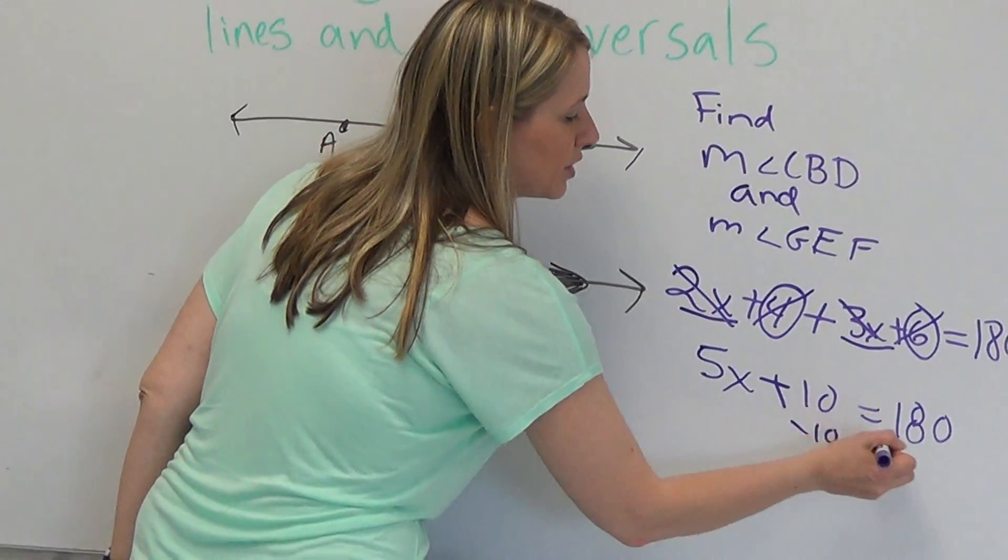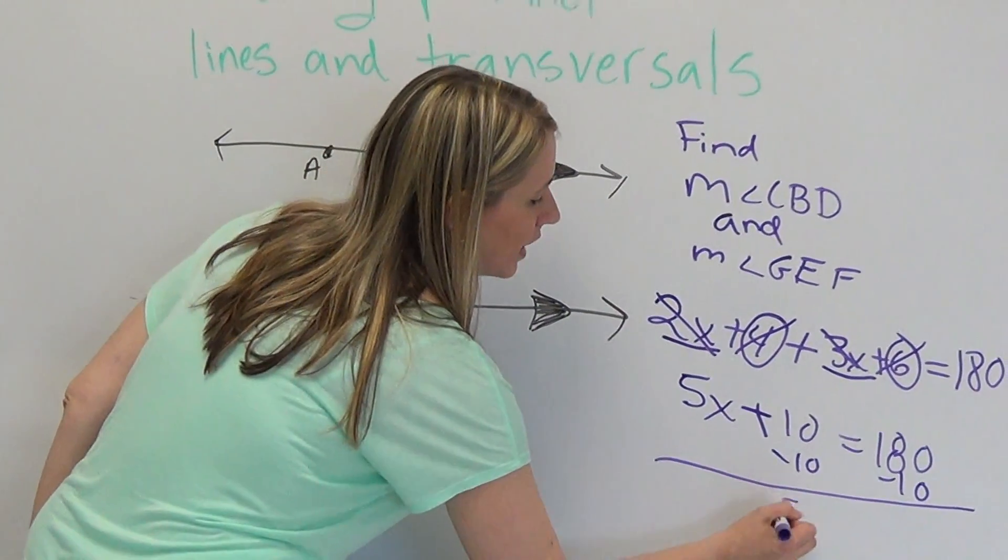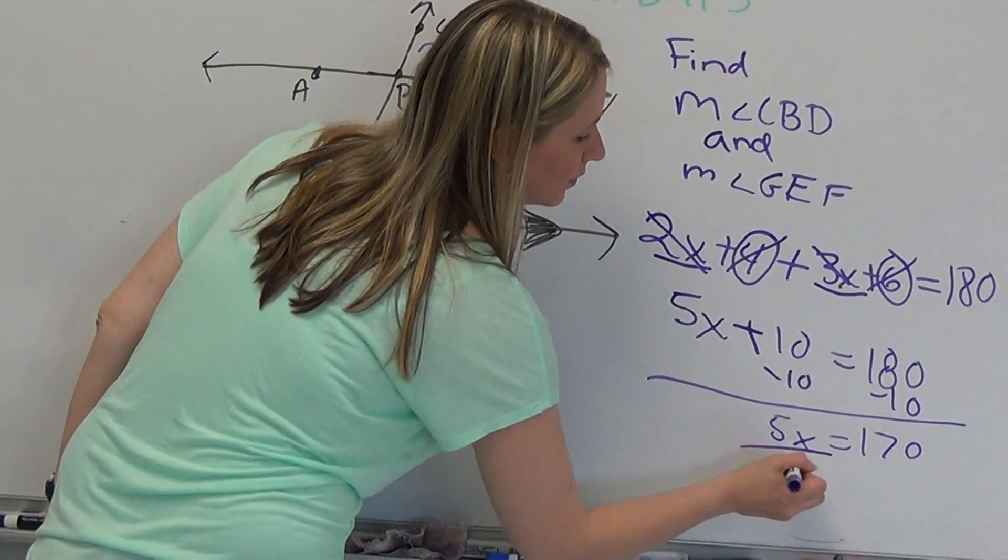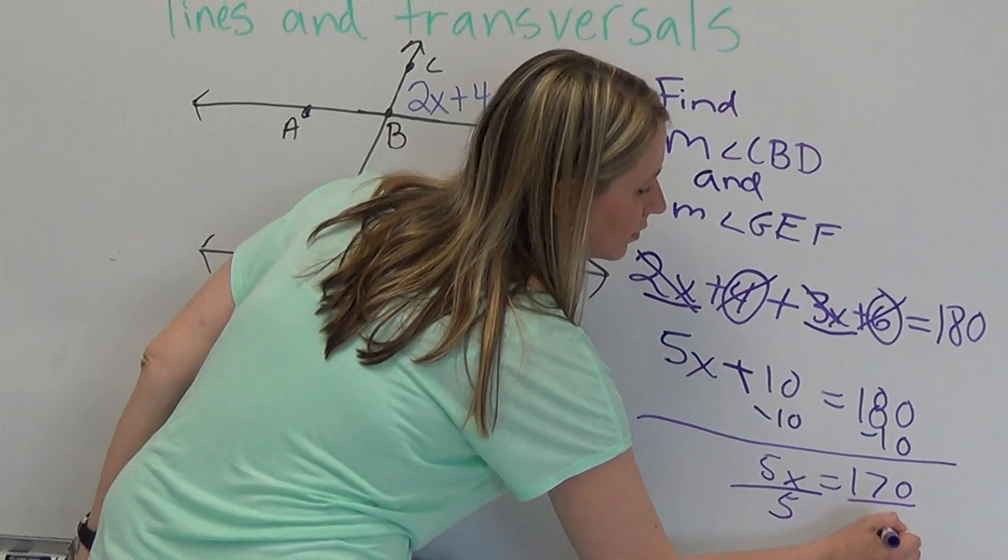Subtract 10 from both sides. You get 5x is equal to 170. Divide by 5 to solve for x.